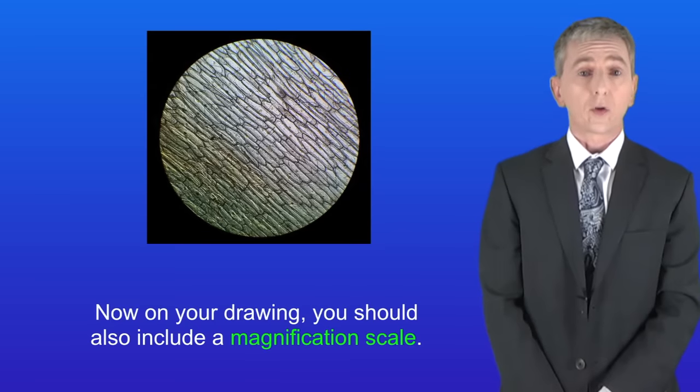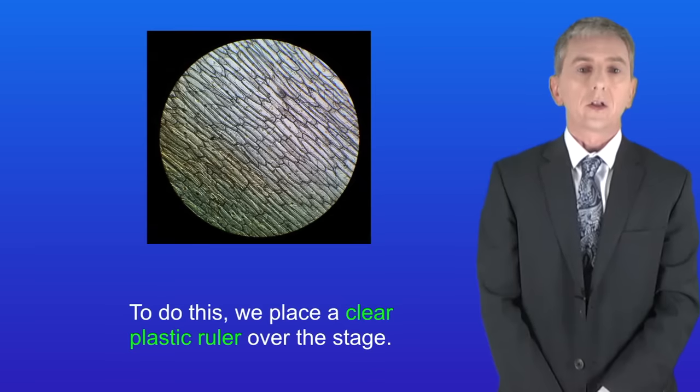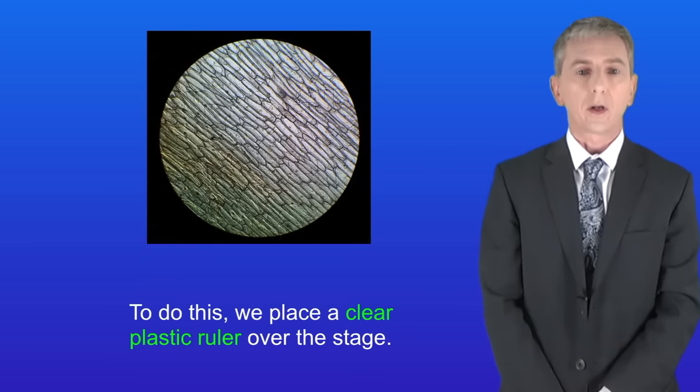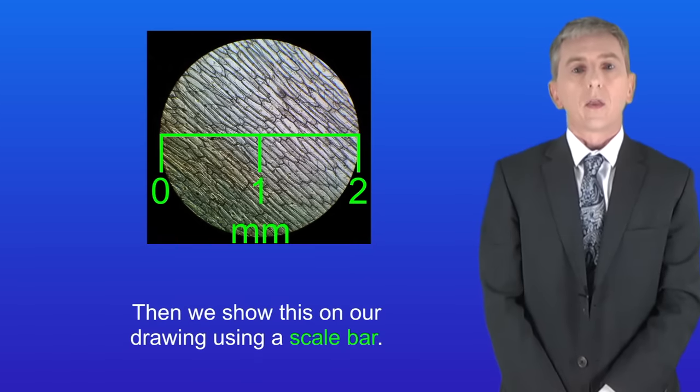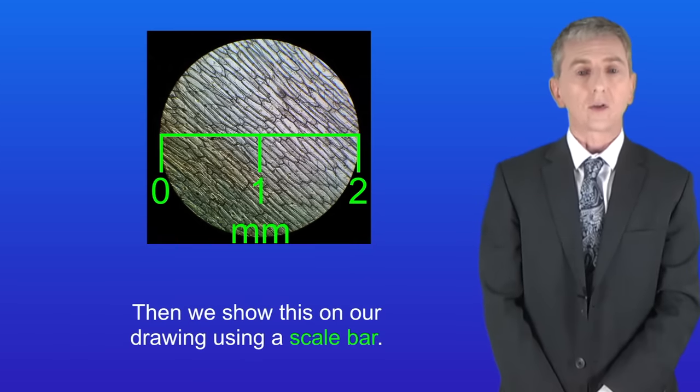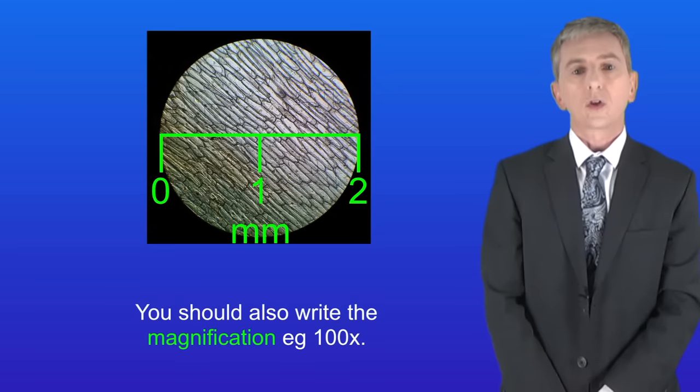On your drawing you should also include a magnification scale. To do this we place a clear plastic ruler over the stage and we measure the diameter of the field of view in millimeters. Then we show this on our drawing using a scale bar. You should also write the magnification, for example 100 times.